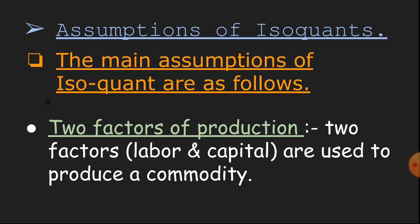The assumptions of isoquants are as follows. First, two factors of production — labour and capital — are used to produce a commodity. Second, divisible factors: factors of production can be divided into small parts.